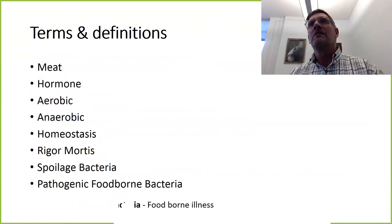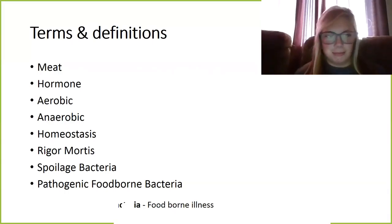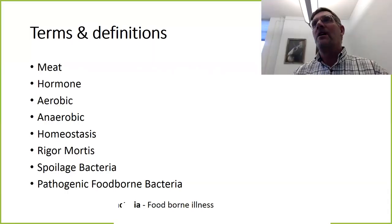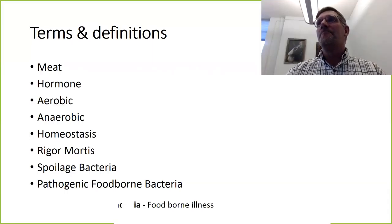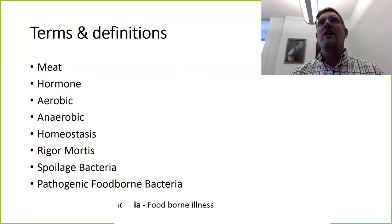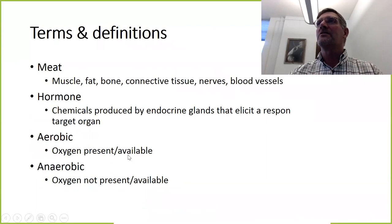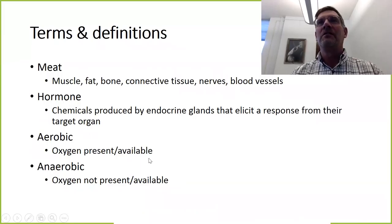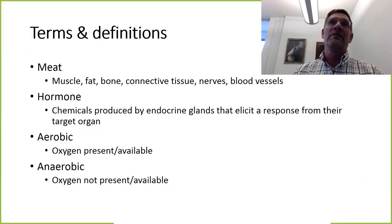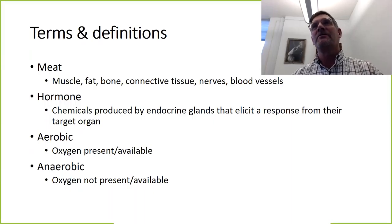What is meat? Meat is muscle — that's most of it. We would also include fat, bone, connective tissue, nerves, and blood vessels as meat. So when you eat a T-bone steak, you would have muscle, fat, bone, connective tissue, nerves, and blood vessels. People sometimes bring me a sample from a piece of meat asking what it is — it always turns out to be a blood vessel, slightly rubbery, but a normal thing found in meat.